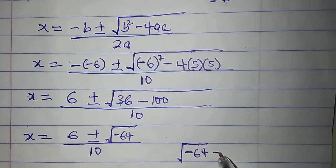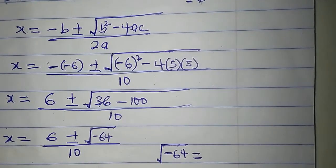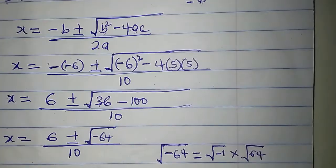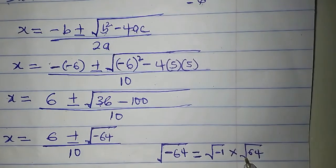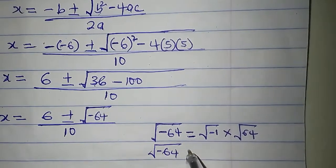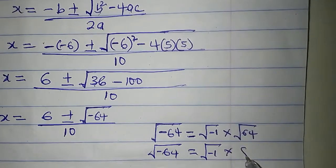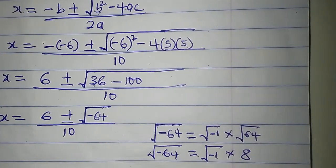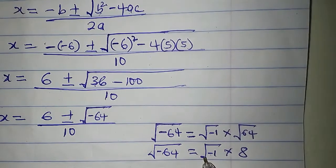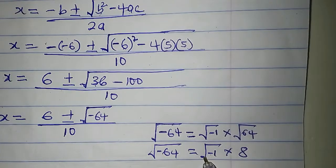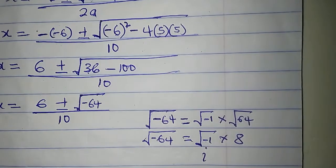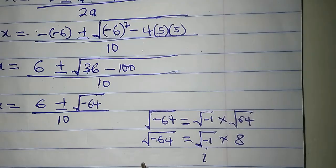But I can write the square root of minus 64 as a product of the square root of minus 1 and the square root of 64. The square root of 64 is 8, so the square root of minus 64 equals the square root of minus 1 times 8. The problem is: what is the square root of minus 1? Root of minus 1 does not have any value under the set of real numbers. So, if we choose the letter i to stand for the square root of minus 1...